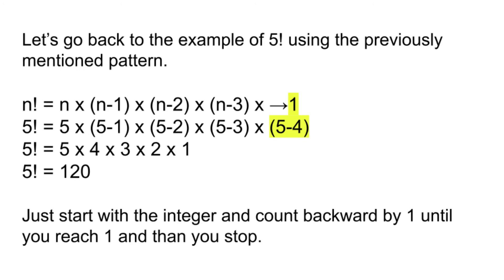Let's go back to the example of 5 factorial using the previously mentioned pattern. n factorial is equal to n times n minus 1 times n minus 2 times n minus 3, until we get to 1. So 5 factorial is equal to 5 times 4 times 3 times 2 times 1, which equals 120.